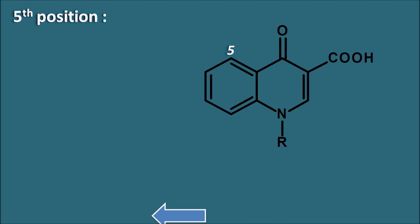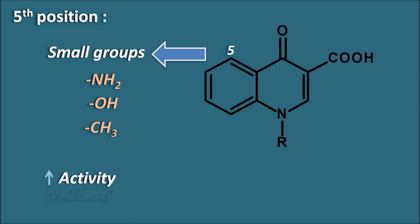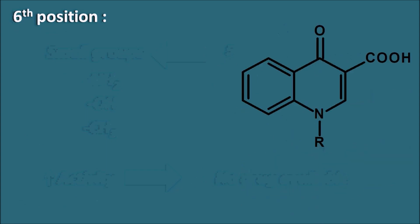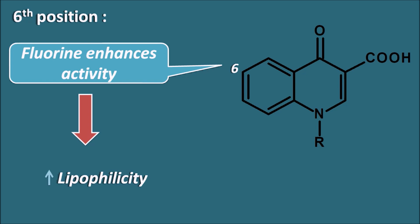At the fifth position, substitution with small groups like NH2, OH, and CH3 may increase the activity — though currently no marketed product has these groups at position 5. At the sixth position, a fluorine group enhances activity. This is why the drugs are called fluoroquinolones — all new generation drugs have a fluorine group at position 6. The fluorine group increases lipophilicity, thereby increasing potency and activity.